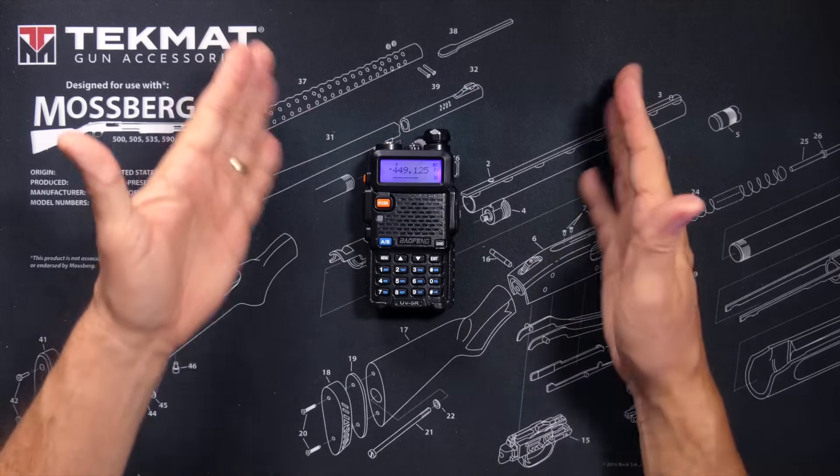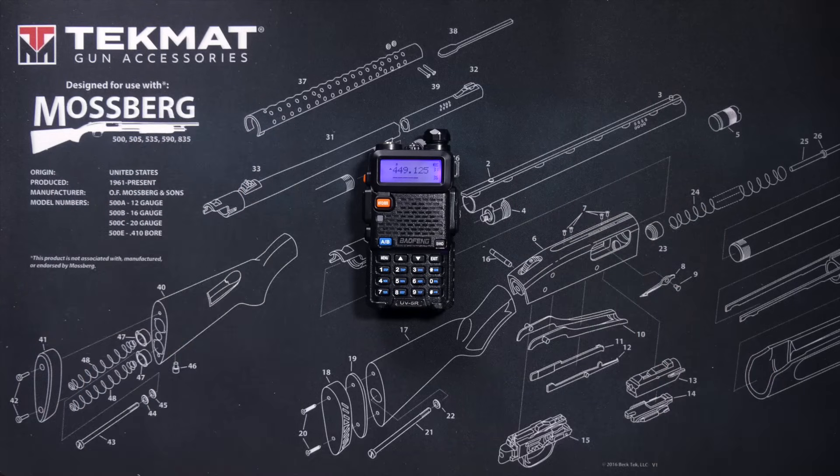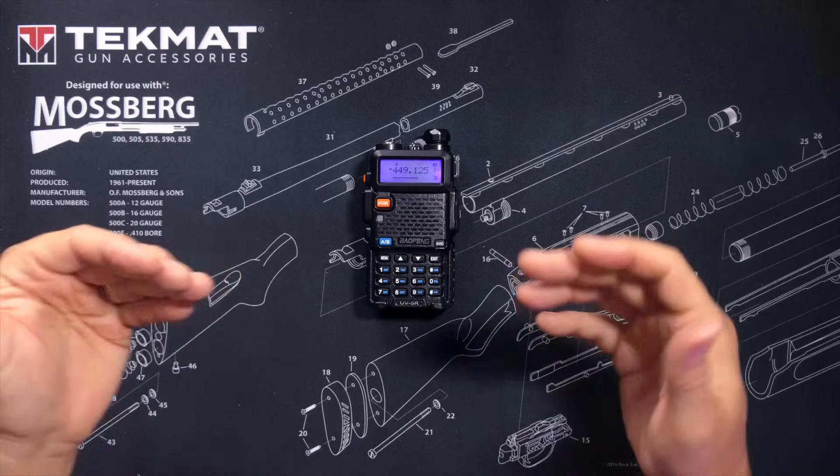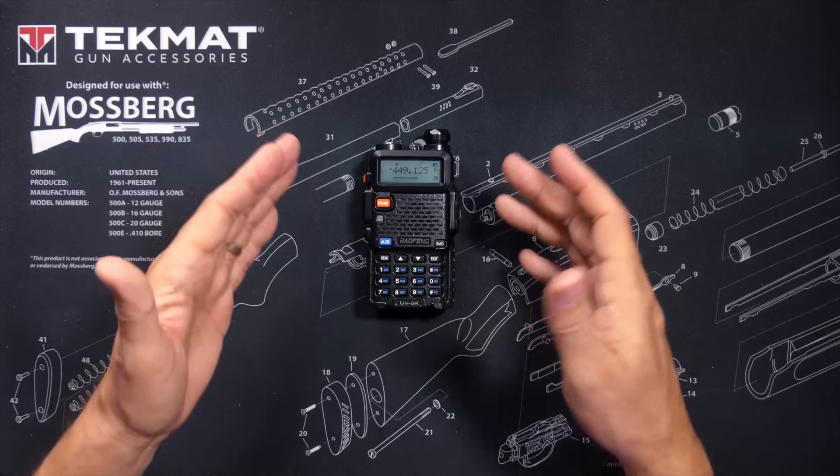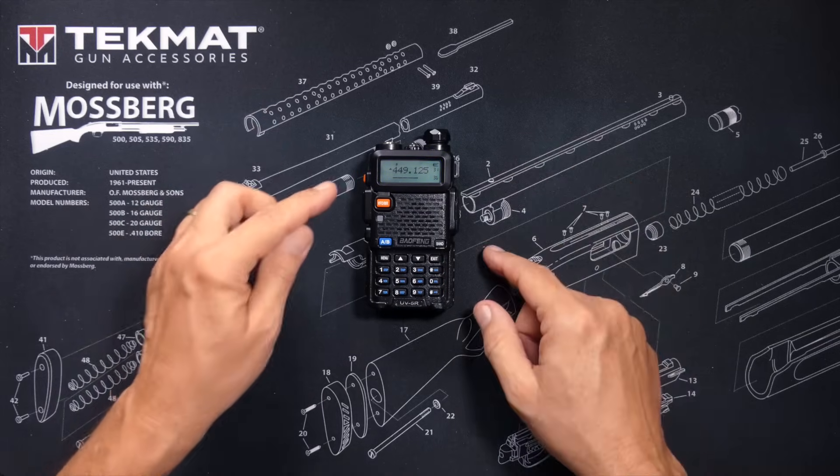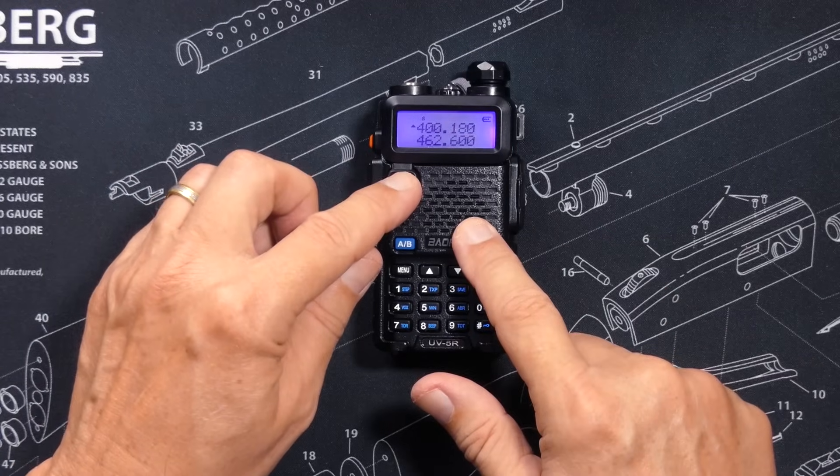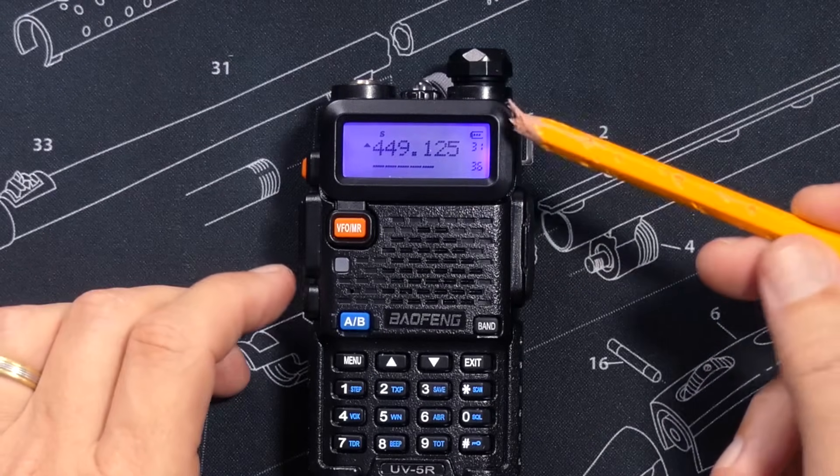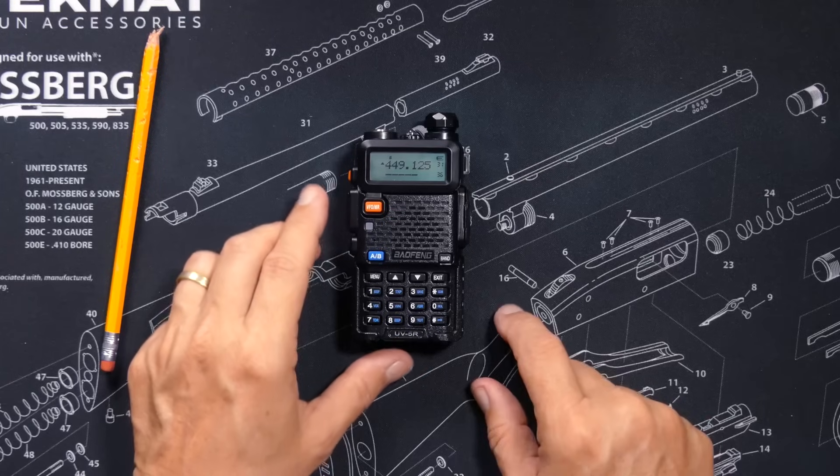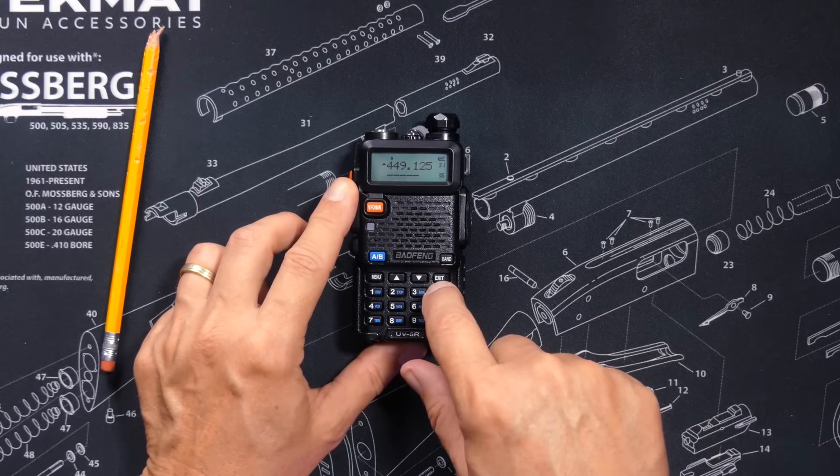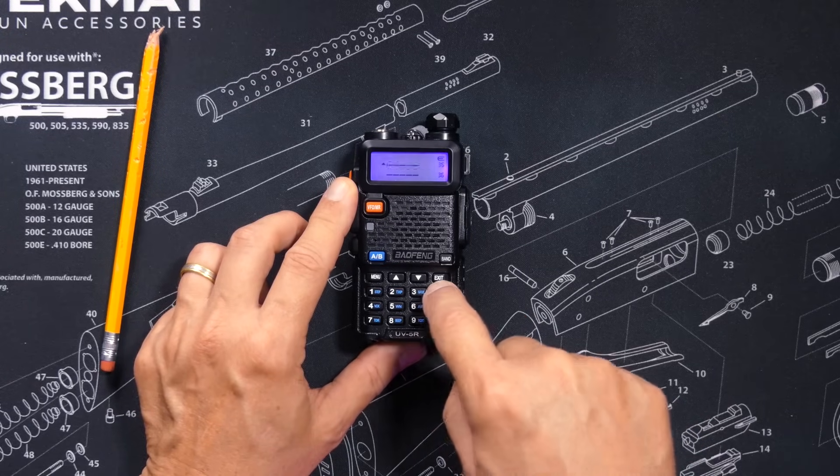Right out of the box, it is very easy to use your Baofeng UV5R as a scanner. Just turn it on, put it into channel mode by pressing the orange button. You can tell you're in channel mode when the little channel numbers appear here. Then press and hold the scan key and it starts scanning through all of your channels.